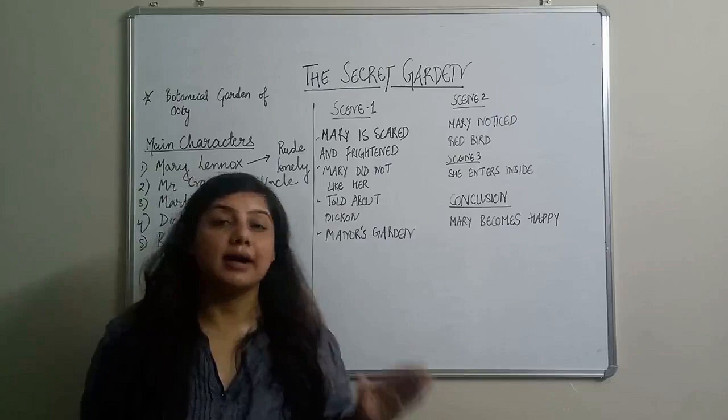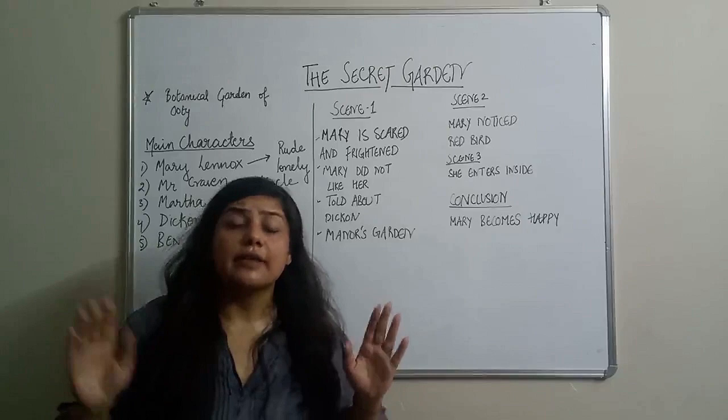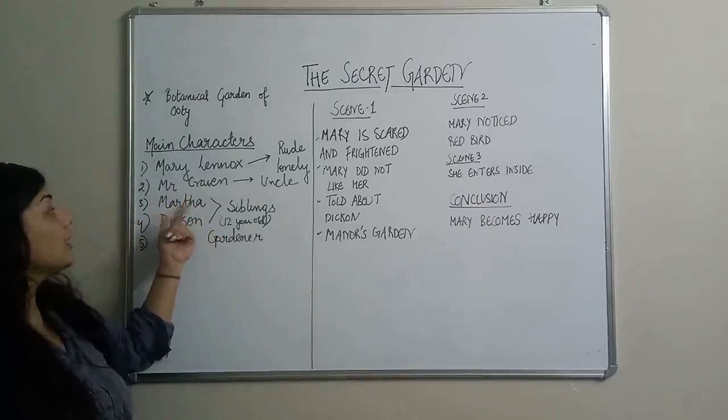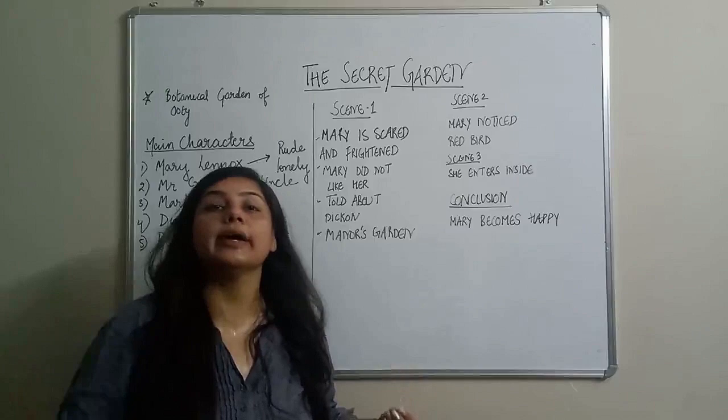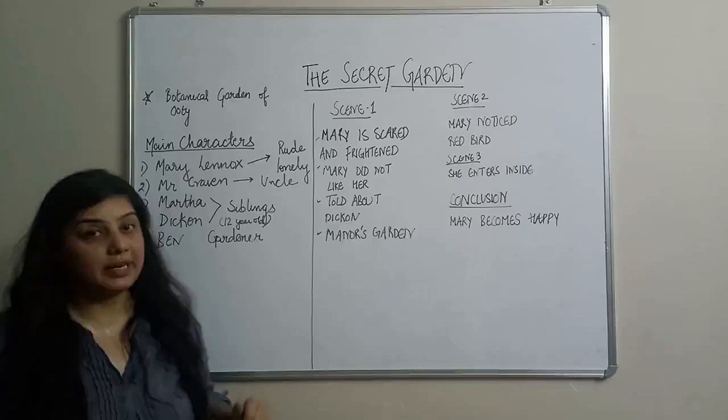Martha came to her work and started talking with Mary. But Mary did not like Martha, because Martha used to teach Mary good habits. Whenever Mary said she didn't want to do some work, Martha would quickly tell her to do her own work. For example, if Mary said 'fold my clothes,' Martha refused and said she had to fold her own clothes. So Mary actually did not like Martha very much, but Martha used to take care of her.